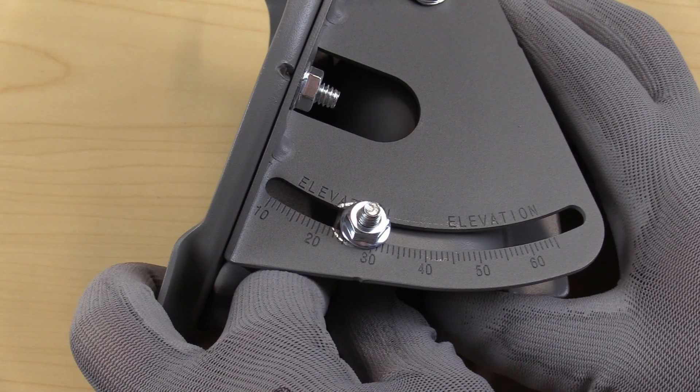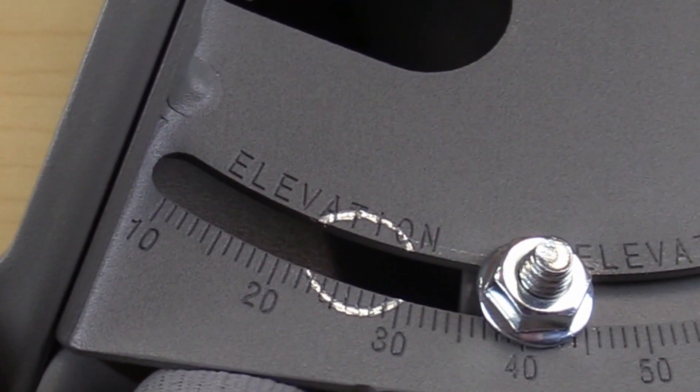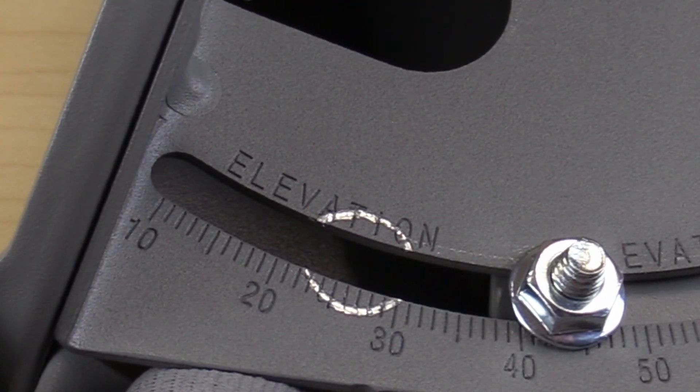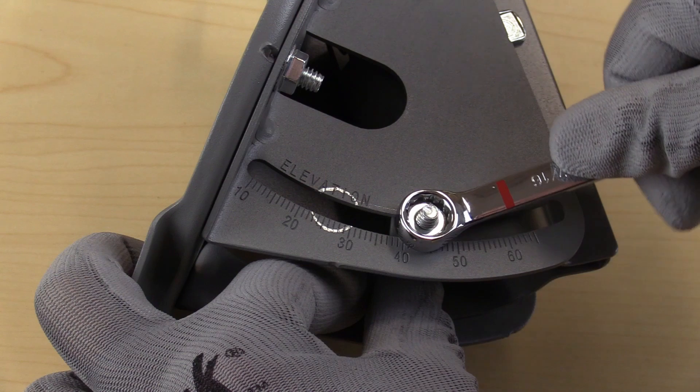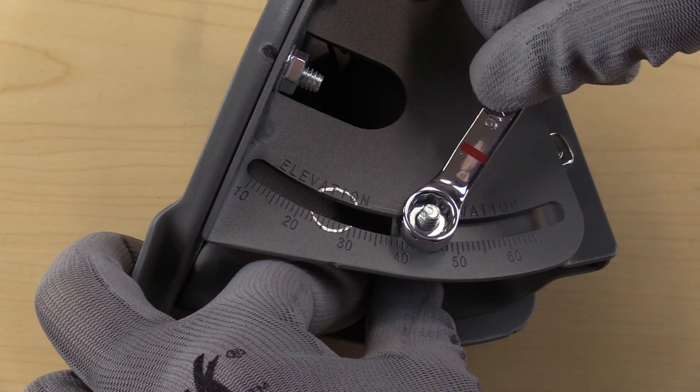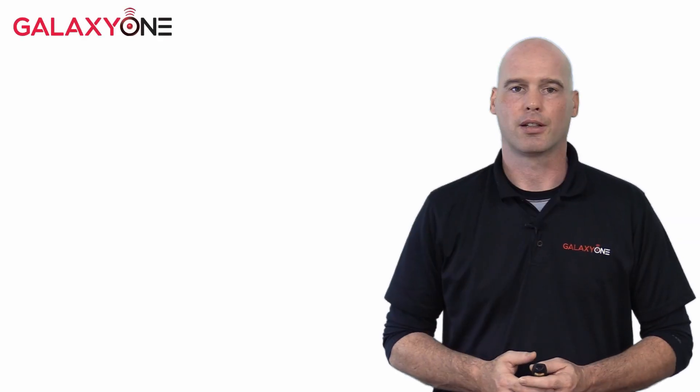Now pivot the mast clamp until the alignment indicator is in line with the indicated 38 degrees for elevation. Snug the two 7/16ths nuts on the left and right sides of the mast clamp mounting structure. That's it, the elevation is set.